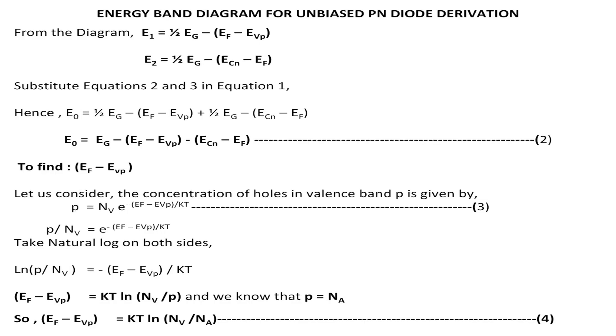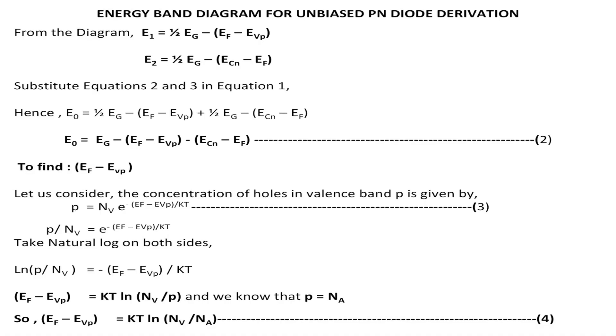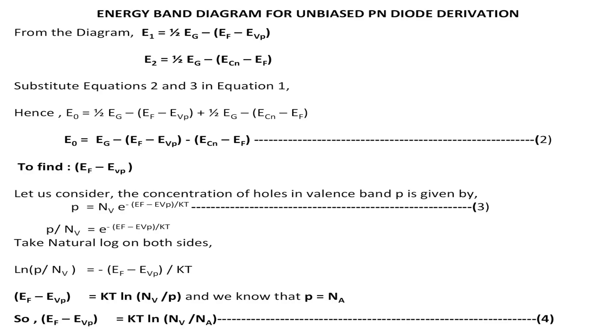Similarly, we can find E2. E2 can be given as half EG minus (ECN minus EF). We consider ECN minus EF because ECN is of higher energy level and EF is the lower energy level. So the equation is E2 equal to half EG minus (ECN minus EF). Now E0 is given as E1 plus E2. Adding these two equations, we get E0 equal to half EG minus (EF minus EVP) plus half EG minus (ECN minus EF). The two half EG terms combine to give EG, so we get E0 equal to EG minus (EF minus EVP) minus (ECN minus EF). We are going to find out these terms separately.